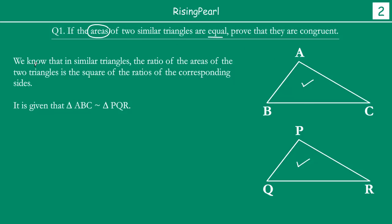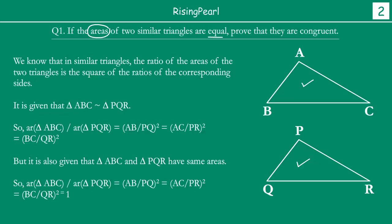We know that in similar triangles, the ratio of areas of two triangles is equal to the square of ratios of corresponding sides. Since triangle ABC is similar to triangle PQR, we can write: area of triangle ABC divided by area of triangle PQR equals AB/PQ whole square, equals AC/PR whole square, equals BC/QR whole square. But it is given that these two triangles have the same area, so area of ABC equals area of PQR, meaning each of these ratios is equal to 1.